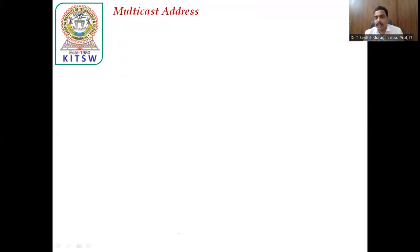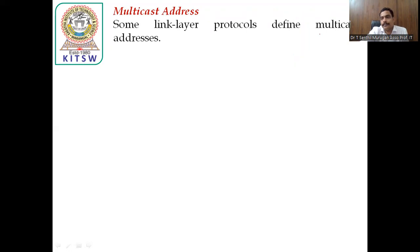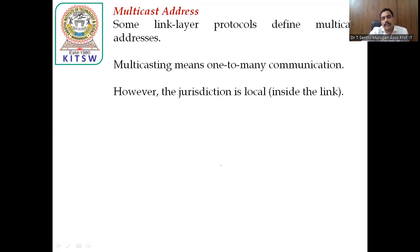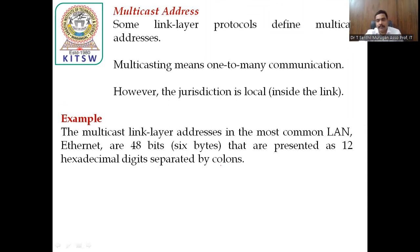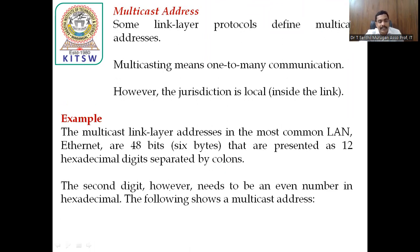Next, multicast addressing. Multicasting means group address — one-to-many communication, where one message goes to a group of people. Some link layer addressing is one-to-many communication, however the jurisdiction is local — inside the link. A multicast link layer address is the same size as a unicast address, there is no difference in width and size. But the second digit of the first byte needs to be an even number in hexadecimal. The second number being even means that is a multicasting address. Remaining bytes are the same as a unicast address — just remember that the second bit being even means multicast addressing.